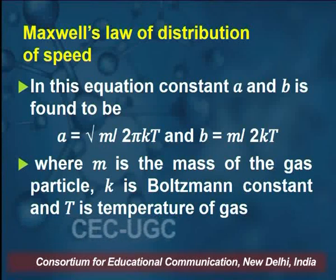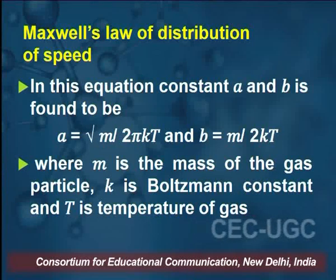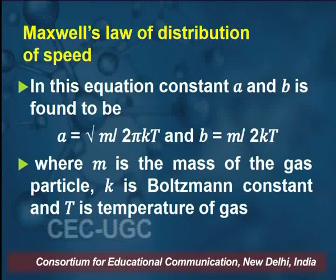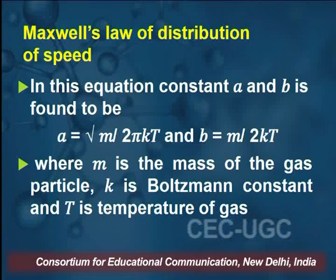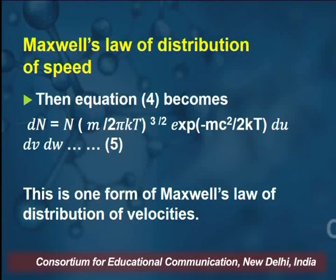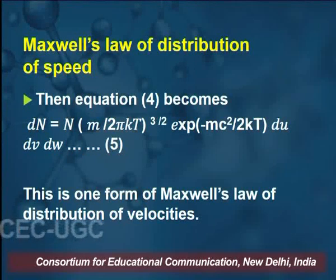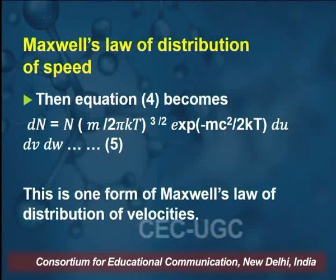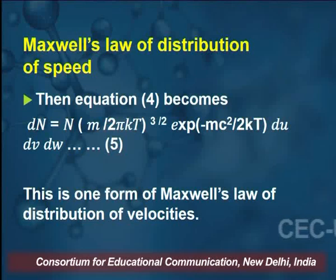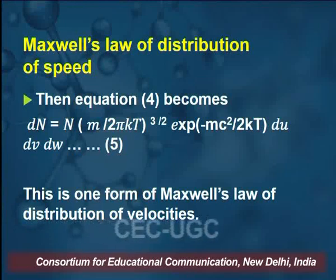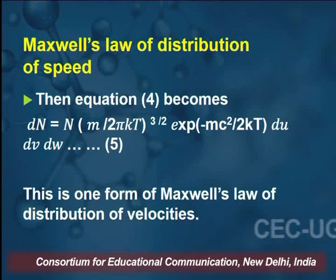So we have determined both constants: a = √(m/(2πkT)) and b = m/(2kT), where m is the mass of the gas particle, k is the Boltzmann constant, and T is the temperature of the gas. Equation 4 thus becomes: dn = n·(m/(2πkT))^(3/2)·e^(-mc²/(2kT))·du·dv·dw. Call this expression 5. This is one form of Maxwell's law of distribution of velocities.